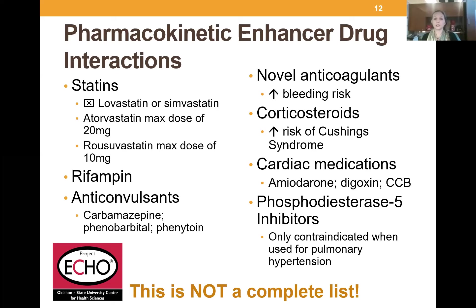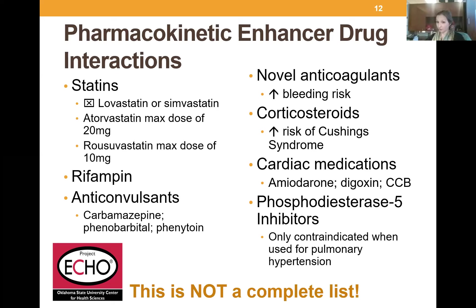Cardiac meds: the biggest one I see is calcium channel blockers, specifically Norvasc. The normal max is 10 mg, but if they're on a protease inhibitor you should probably max out at 5 mg. You can also see interactions with amiodarone and digoxin, but Norvasc is what I see most commonly. Phosphodiesterase-5 inhibitors are only contraindicated at the daily dose used for pulmonary hypertension — the boosted effect is too great. However, if you're giving a PDE5 inhibitor for erectile dysfunction, you can do so; I recommend starting at lower doses since those drugs will be boosted. You may not need Viagra 50 mg — Viagra 25 mg may be sufficient.